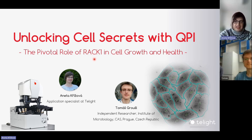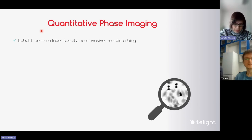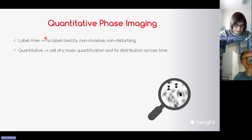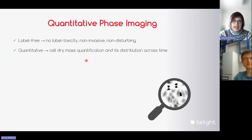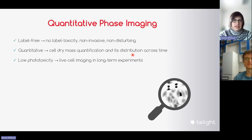Let me remind you what quantitative phase imaging is. Quantitative phase imaging is a label-free technique for live cell imaging. There is no label toxicity, it's non-invasive and non-disturbing method. The word quantitative refers to the possibility to quantify cell dry mass very precisely and also its distribution across time. There is low phototoxicity, so live cell imaging can be performed in long-term experiments.